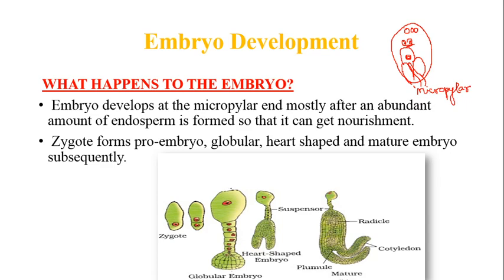This can be asked in your NEET exam as an objective question: where does development occur? They may give chalazal end or micropylar end as options, and you must know where fertilization and embryo development take place. The zygote forms a pro-embryo, then passes through globular, heart-shaped, and mature embryo stages.